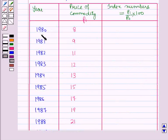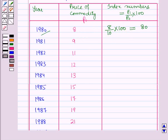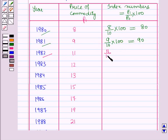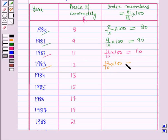For the year 1980, the index number is 8 over 10 into 100, which equals 80. For 1981, it is 9 over 10 into 100, which equals 90. For 1982, the index number is 11 over 10 into 100, which equals 110. For 1983, it is 12 over 10 into 100, which equals 120.